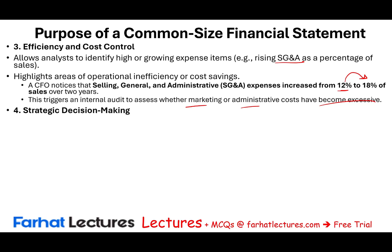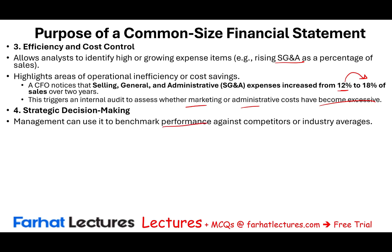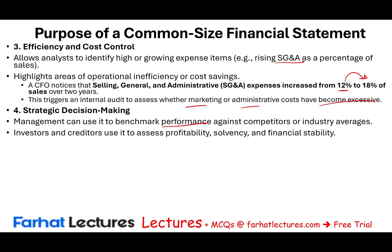Strategic decision-making: we use this information to benchmark performance against competitors or industry averages. From my actual experience in practice, before performing an audit or a review, you turn the numbers into percentages to highlight any deficiencies, deviations, or abnormalities from expectations. Investors and creditors also use it to assess profitability, solvency, and financial stability.